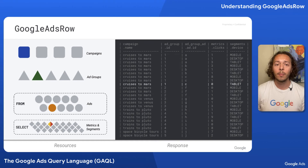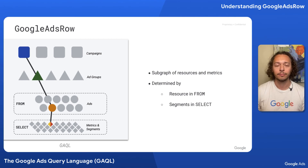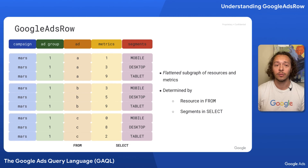So remember, Google Ads row represents a flattened subgraph of the account resource tree. In summary, each Google Ads row is a subgraph of resources and metrics. And this subgraph is determined by the resource that appears in the from clause and any segments that are included in the select clause. And the response is a collection of these rows — a collection of these flattened subgraphs of resources and metrics.